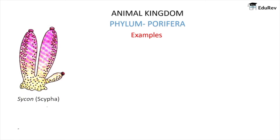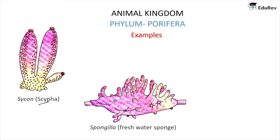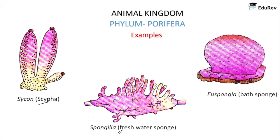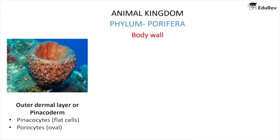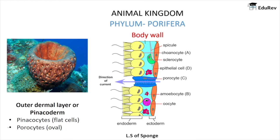Some important examples of sponges are: Sycon, also called Scypha; Spongilla, which is also known as the freshwater sponge; and Euspongia, called the bath sponge. If we cut the cross-section of a sponge, its internal structure will look like a longitudinal section. The outermost layer of the sponge is called the pinacoderm.